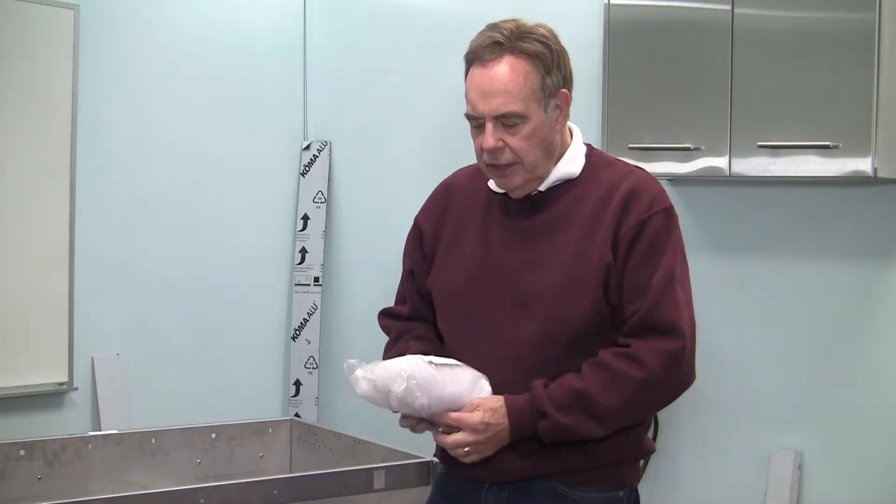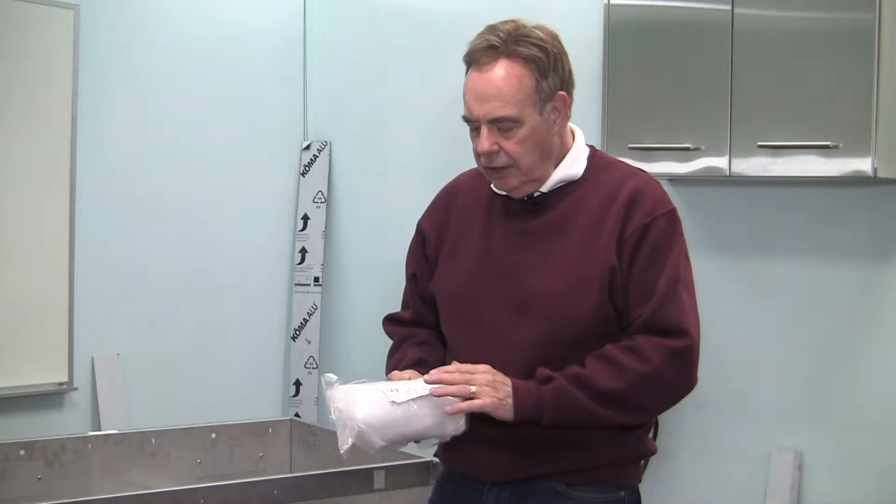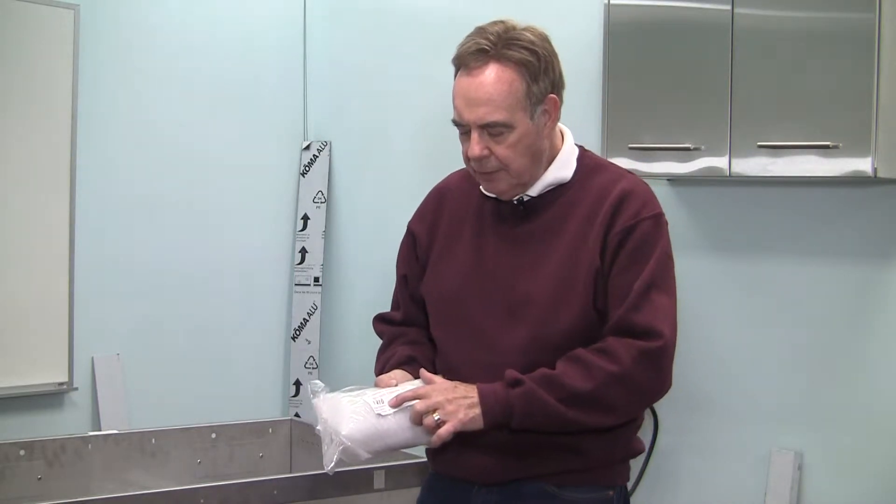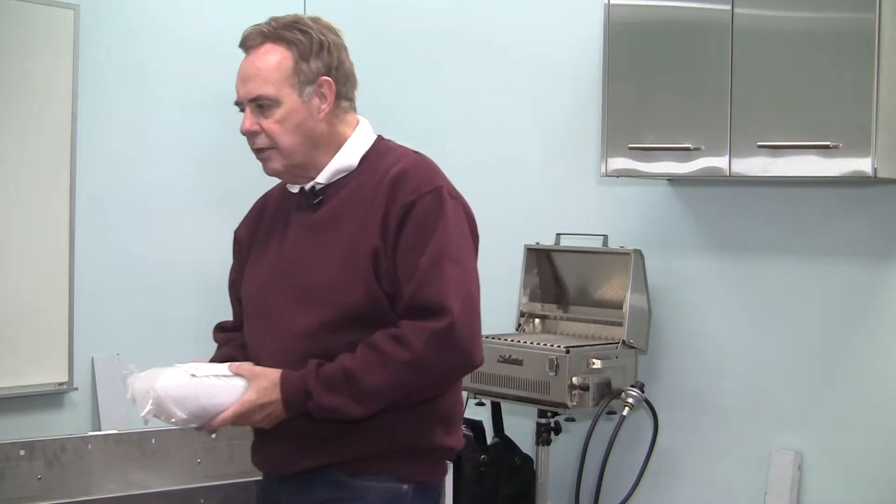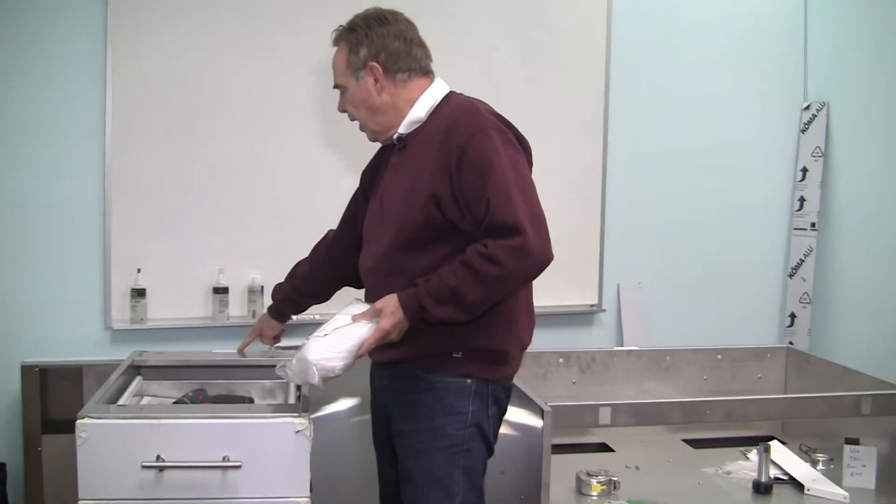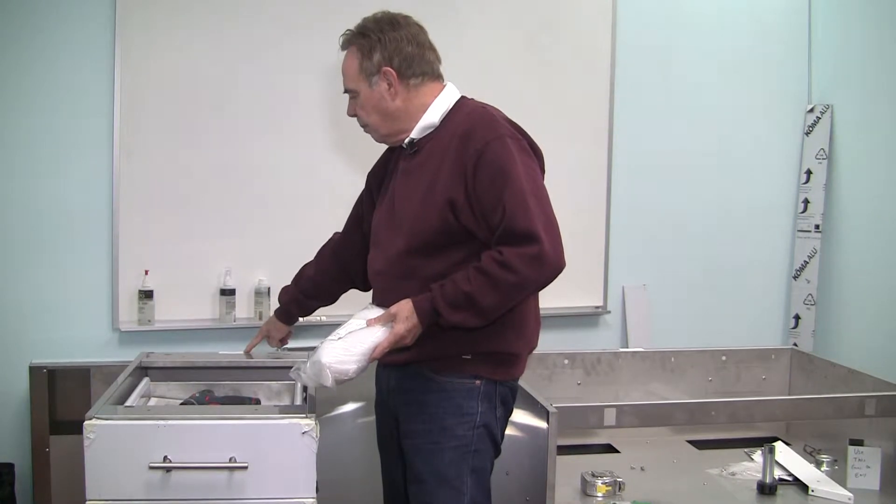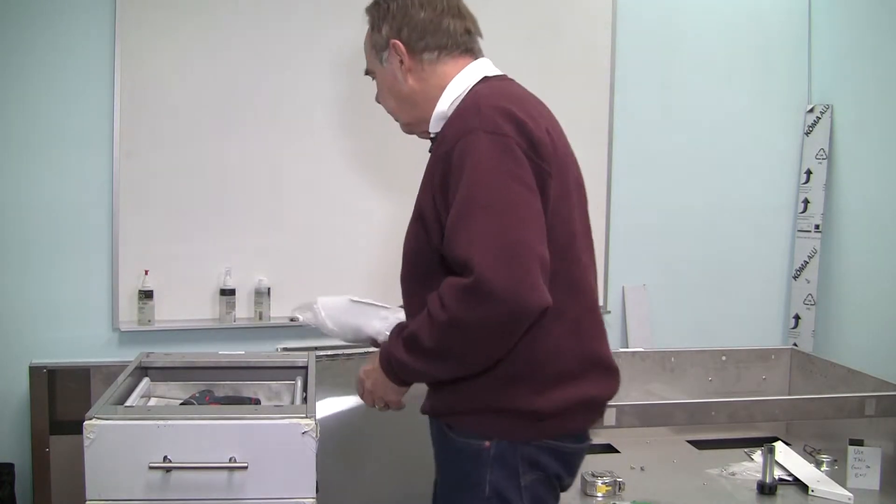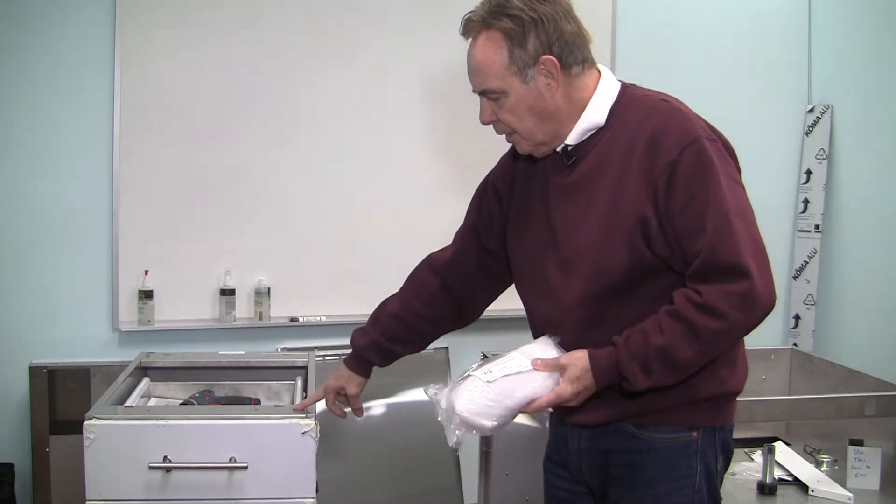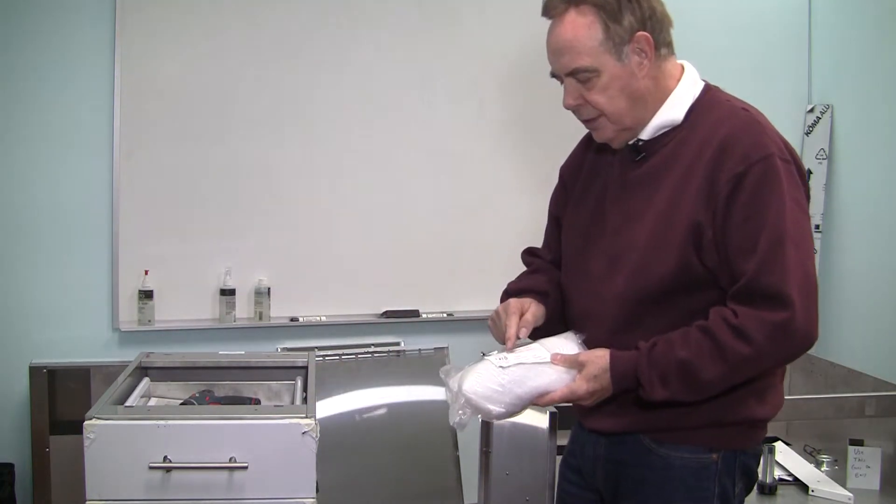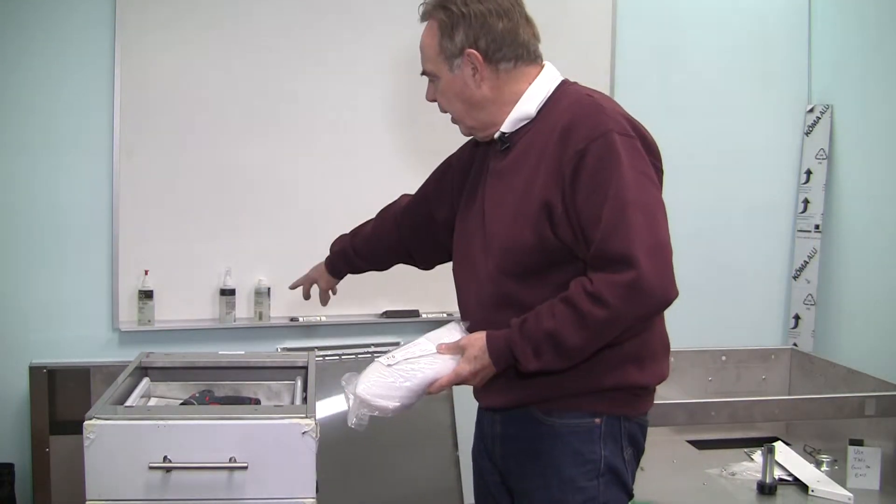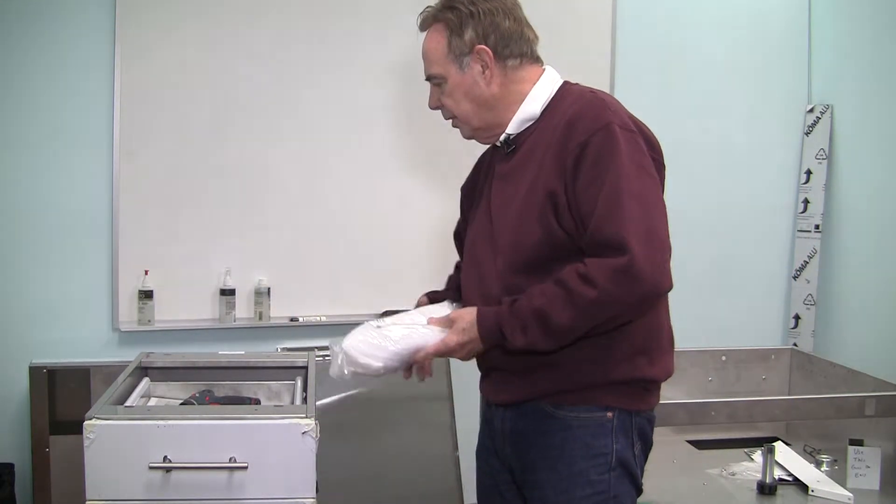Inside the box is a bag that is marked with the cabinet number on it, and this will correspond with a tag in the back of each cabinet. And so, this is a trash pull. It's an 18 inch wide cabinet, and it corresponds with the name in the back.